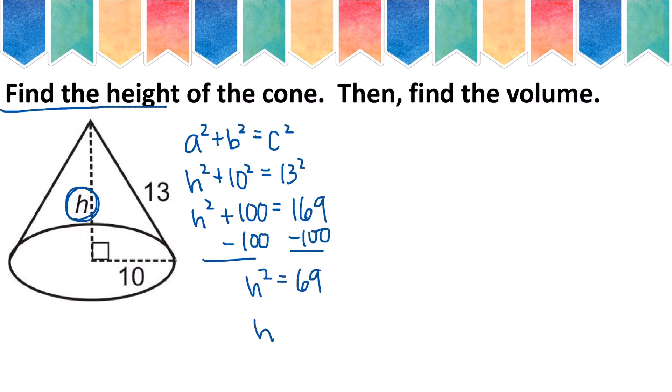Then to get h by itself, I will need to do the square root. So the square root of 69 is approximately 8.31. So we have found the height of our cone. It is 8.31.